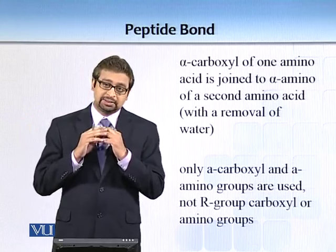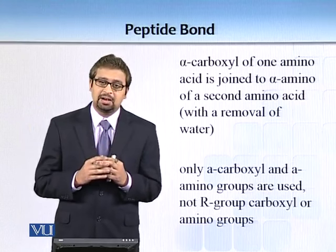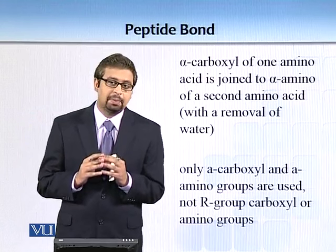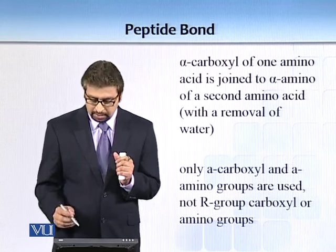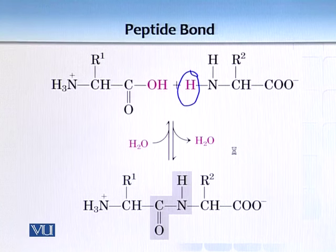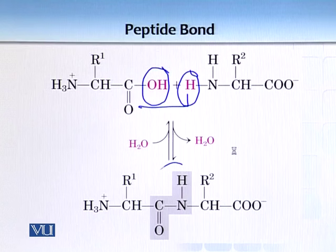The side chains which we discussed earlier do not participate in peptide bond formation. In this reaction, the hydrogen from the amino group and the hydroxyl from the carboxylic group combine to form water, and the resulting bond is known as a peptide bond.